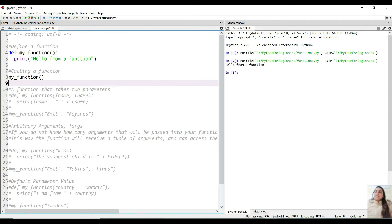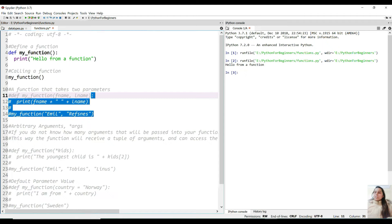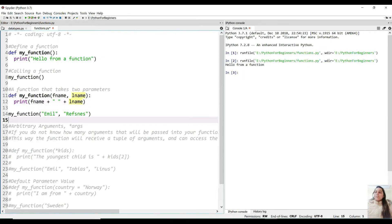A function that takes two parameters. A function is defined with the keyword def my_function again and it has two parameters: first_name, last_name. I have to print first name and then a space and the last name. I'm calling the function and passing in, suppose, and the last name, and running it.